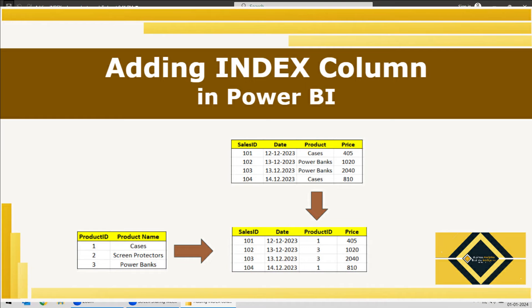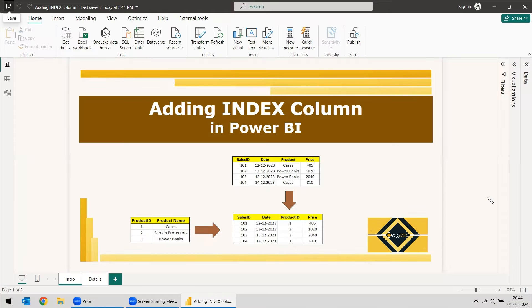Welcome to this new video. This video is regarding adding index column in Power BI. The index function is found in Power Query in Power BI when we go to Transform Data, and it will be under the Add Column options where we can add the index column.